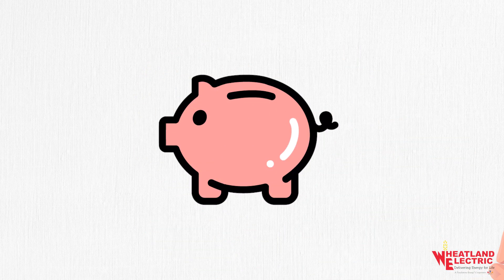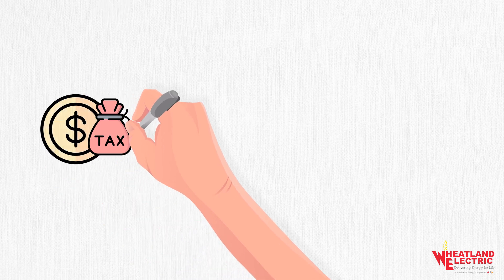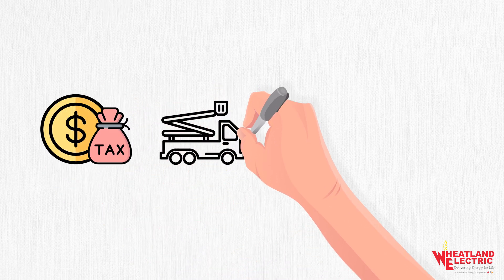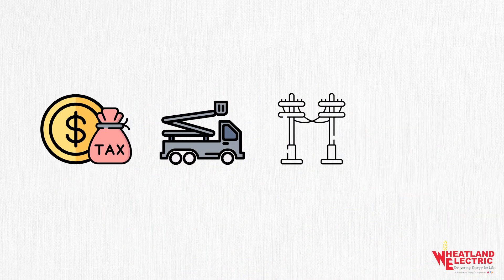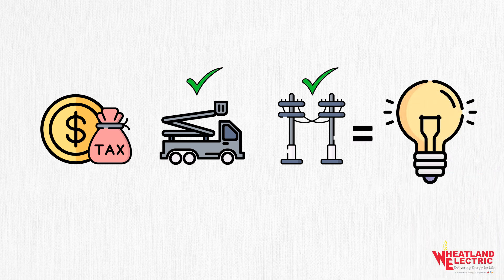It helps us recover the cost to maintain our system. We must pay for things like insurance, taxes, trucks, system equipment, and administrative costs — not to mention making sure our equipment works so your lights turn on when you want them to.